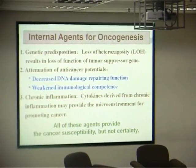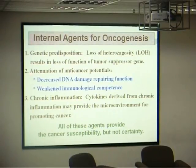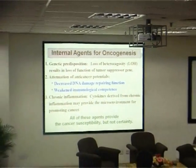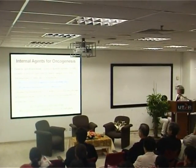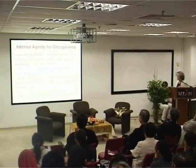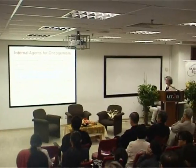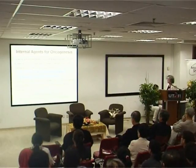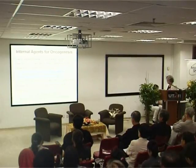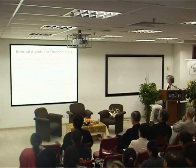The internal agents for oncogenesis include genetic predisposition, that is loss of heterozygosity (LOH), and alterations of anti-cancer potentials, such as decreased DNA damage repair function and weakened immunological components. Chronic inflammation is very important because the cytokines derived from chronic inflammation may provide the microenvironment for promoting cancer. All of these agents provide cancer susceptibility, but not certainty.